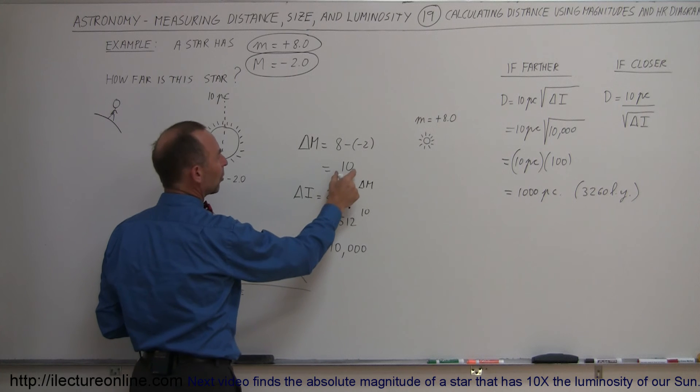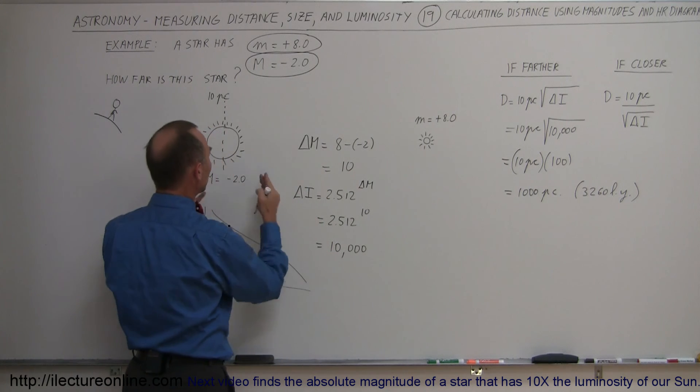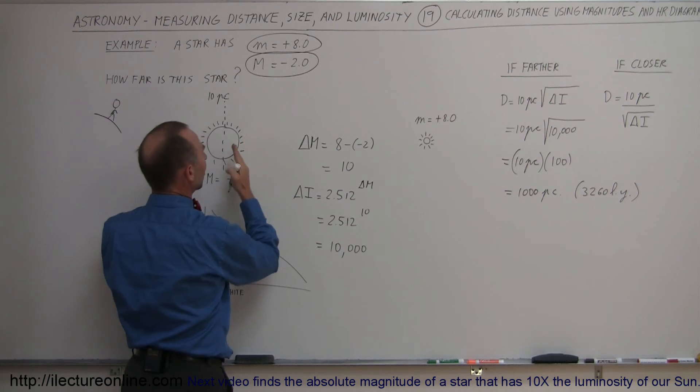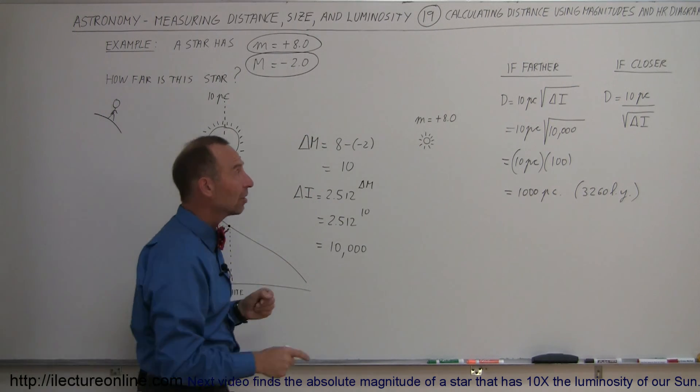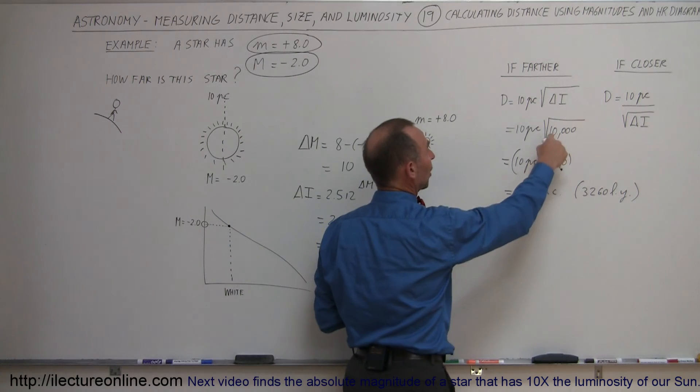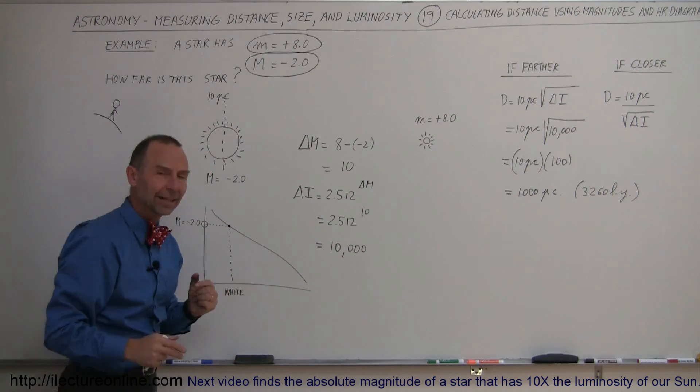We, from that, can then determine the difference in the magnitudes. We can then figure out the difference in the intensities between what it would be if it was at 10 parsecs and what it appears to us where it actually is at. Then we take this equation, 10 parsecs times the square root of the difference in intensities, and we get the actual distance of where that star is at.